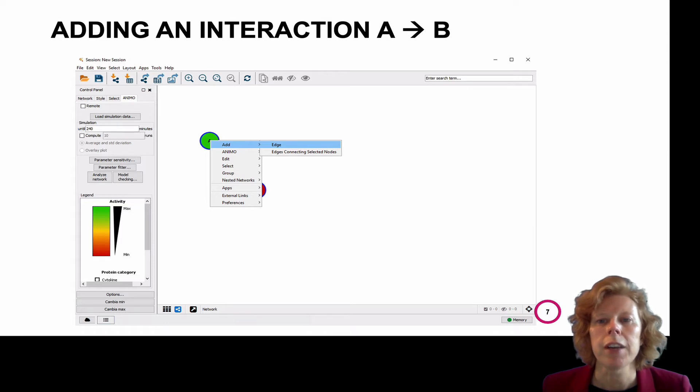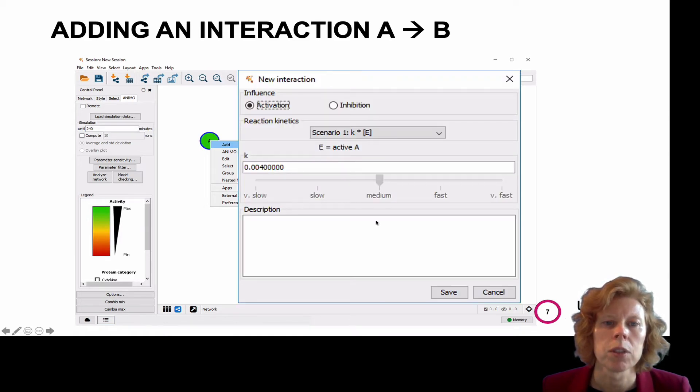To connect the nodes, you add an interaction. For this, you right click on the node that influences the other node. And in the pop-up window, you indicate whether it activates or inhibits. You choose a scenario. I will get back to that later.